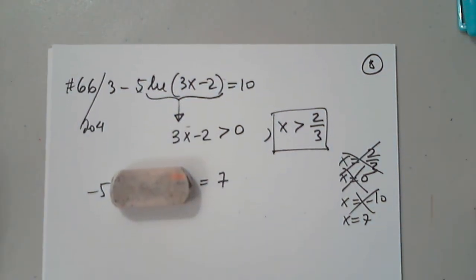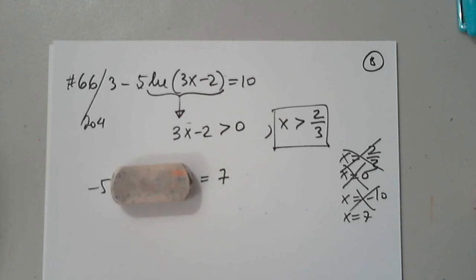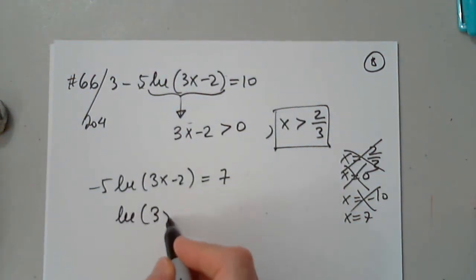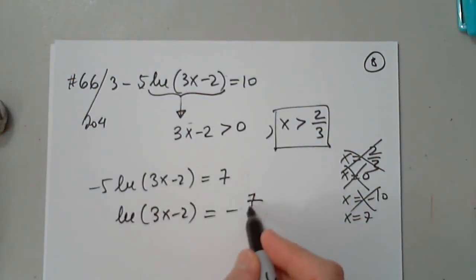I haven't finished cleaning it up. That's it. Awesome. So natural log of 3x minus 2 equals negative 7 fifth.